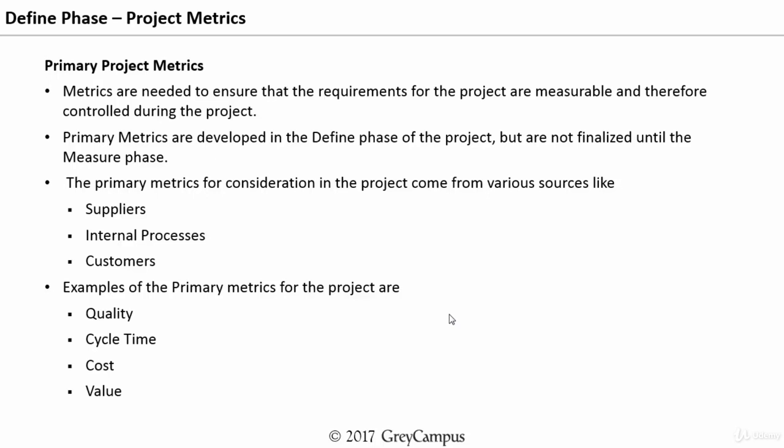These primary metrics are developed in the define phase of the project, but they are not finalized until the measure phase. The primary metrics for consideration of a project can come from various sources like the suppliers, from the internal processes, or from the customers. Some examples of the primary metrics for the projects are quality, cycle time, cost, value, etc. The primary metrics are very important for the project and need to be controlled.